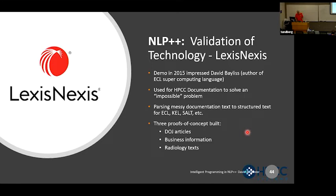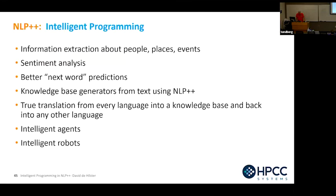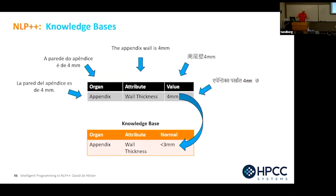I did three proofs of concept on DOJ indictments, business information, and radiology texts. Intelligent programming enables: information extraction of people, places, and events; sentiment analysis; better next-word prediction; knowledge-base generation from texts; and true translation. If you can translate everything into a knowledge base, you can translate to it from any language and out of it — this has been a dream from the beginning of translation. And then we can get our intelligent agents and intelligent robots. These things can happen in the knowledge base.